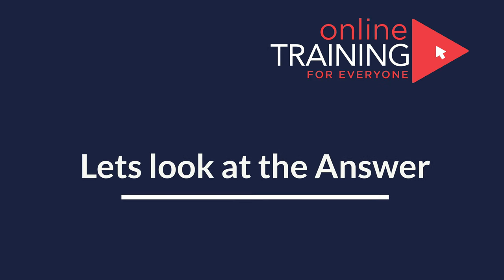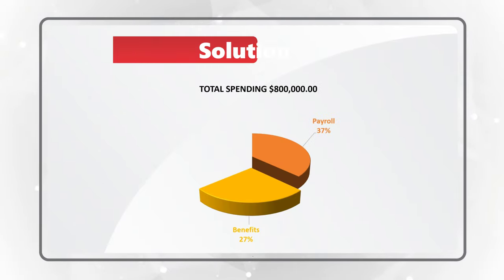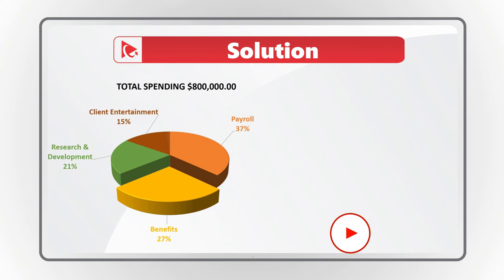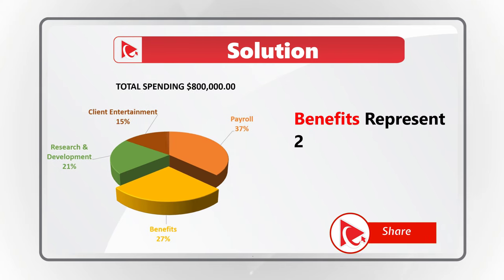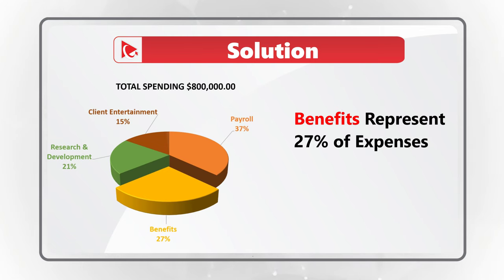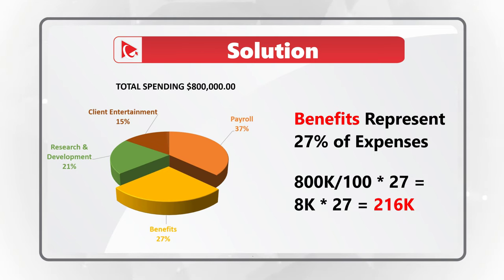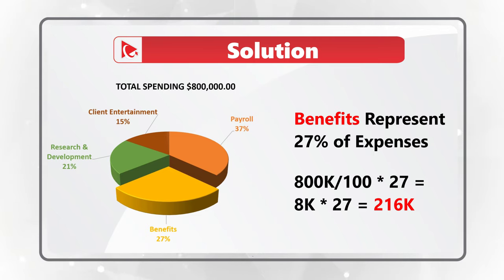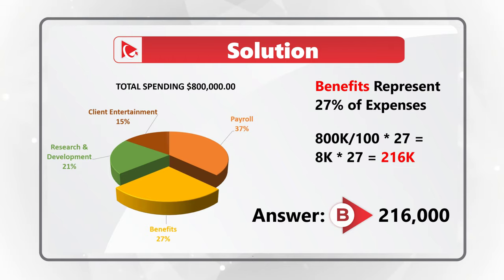The first step is to look at the chart and identify the benefits segment — benefits represent 27% of all expenses. To calculate the amount for benefits, divide $800,000 (the total expense) by 100 and multiply by 27, because benefits represent 27%. That equals 8,000 multiplied by 27, which equals $216,000. So the correct choice is B: $216,000.